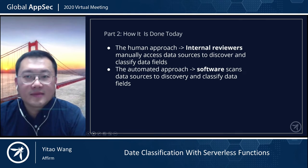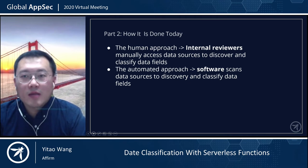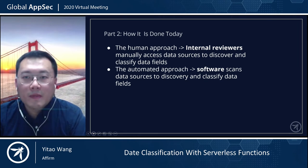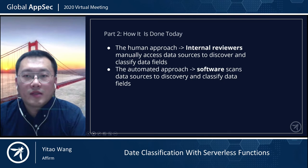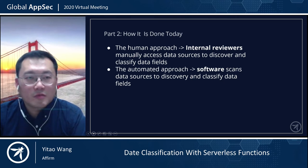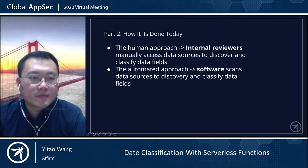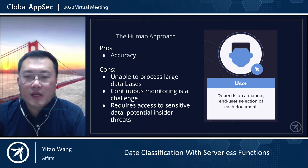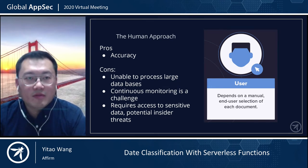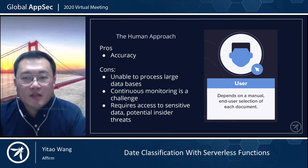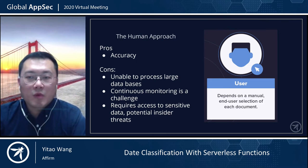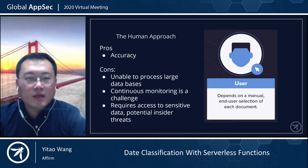There are two ways of doing data classification today. The first way is the human approach, meaning you have internal reviewers — which is human — given access to the data sets and manually reviewing the data source to discover and classify data fields. The second is the automated approach, which allows third-party software or any software to scan the data set for the similar task. Human-based data classification is challenging, especially for enterprise databases and log storages where the dev lifecycle is so short and the data is constantly changing, and the ability to keep track of and correlate multiple data fields is very limited for humans.